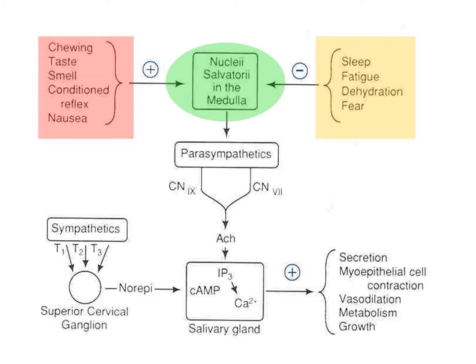This is a simple pathway: parasympathetic or sympathetic activation increases cyclic AMP and increases calcium, so secretions are increased. Central factors that increase salivation are chewing, taste, smell, nausea, etc. Factors that inhibit salivation are sleep, fatigue, dehydration, fear, etc. So far we've talked about two types of secretions: the epithelial cell secretion and the salivary gland secretion. The third type of secretion is the gastric secretions.